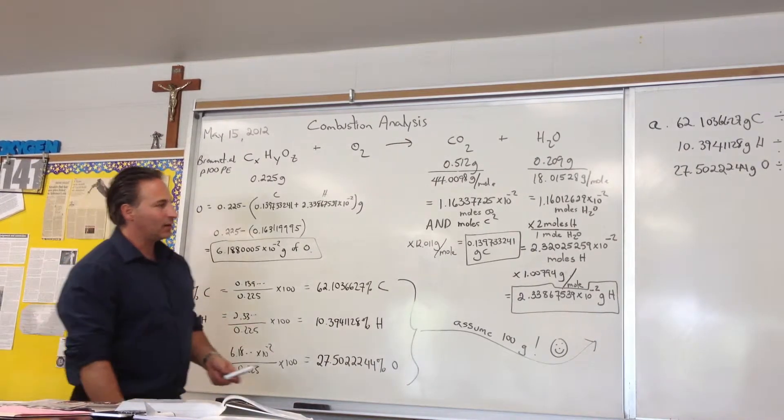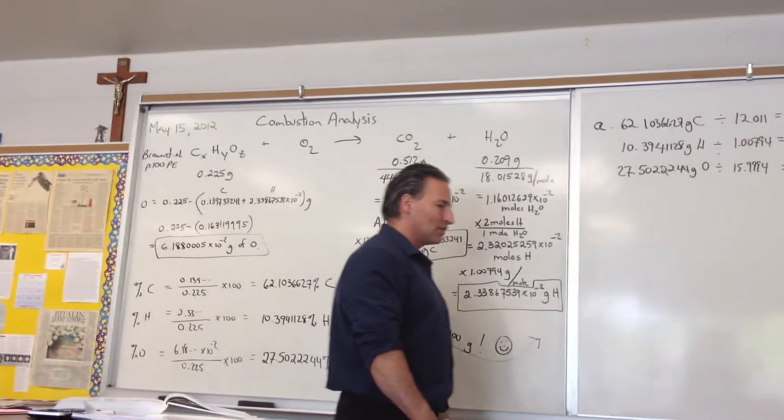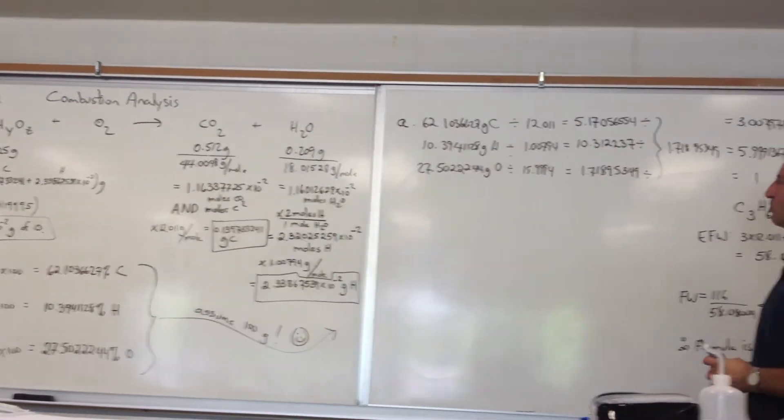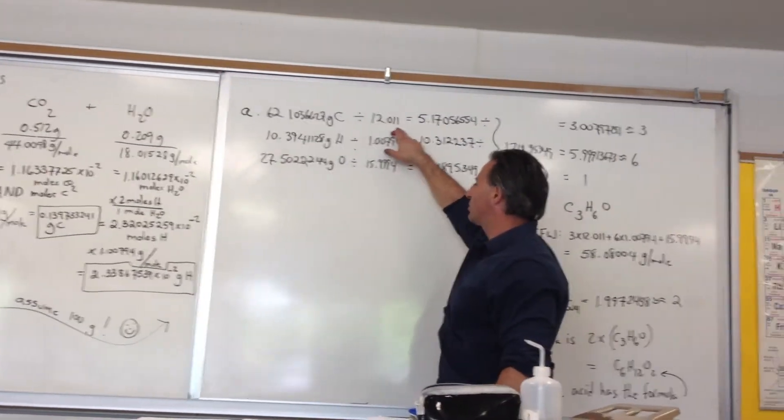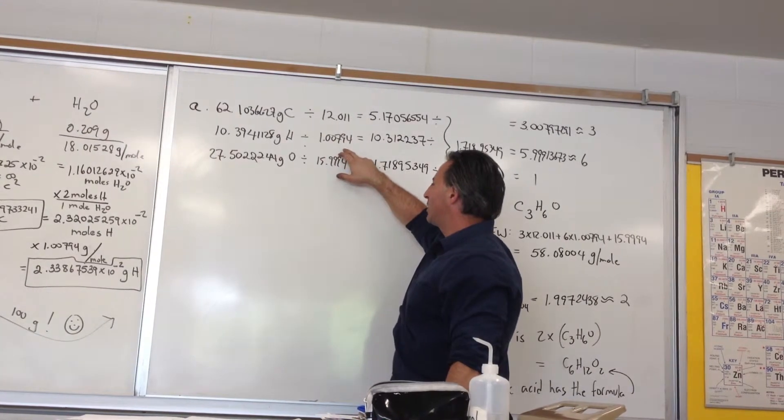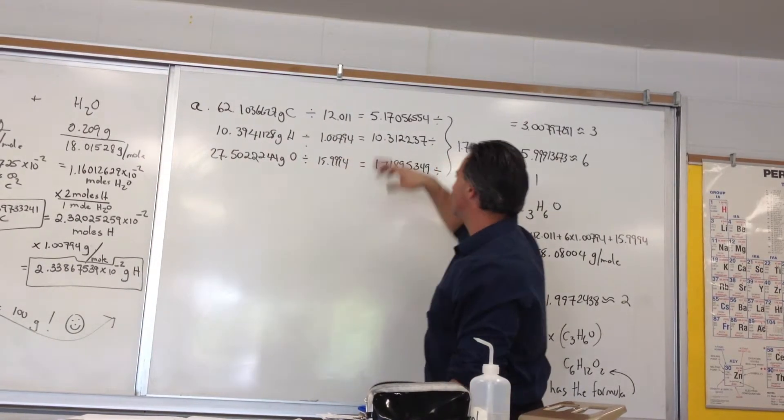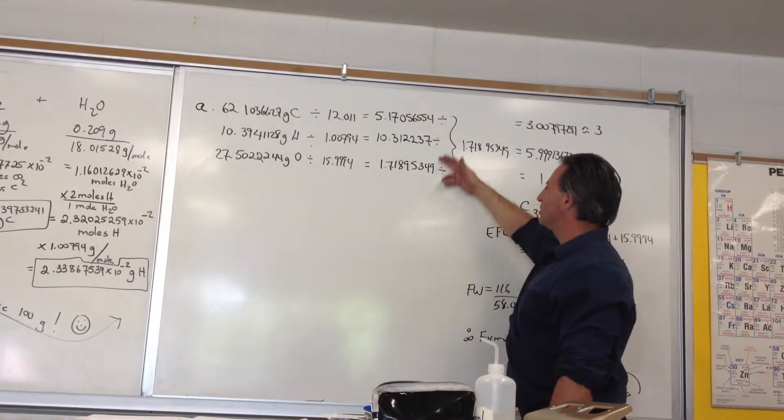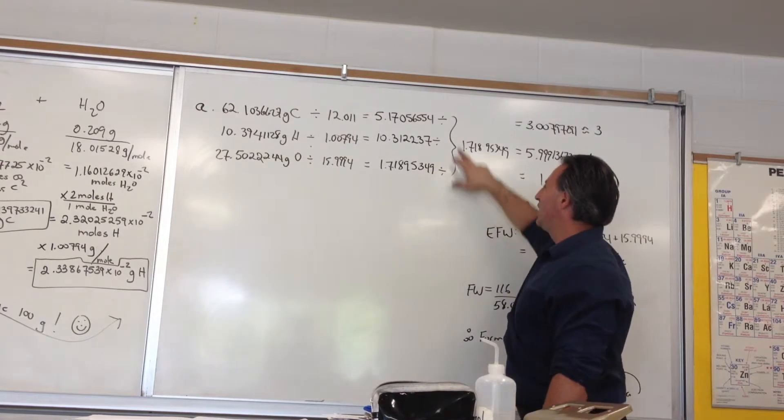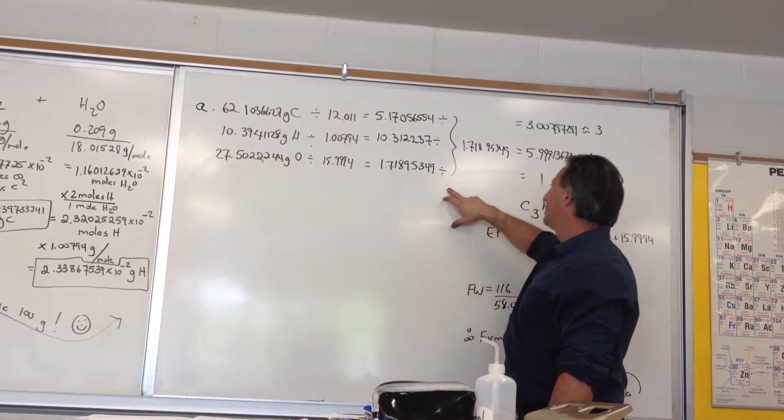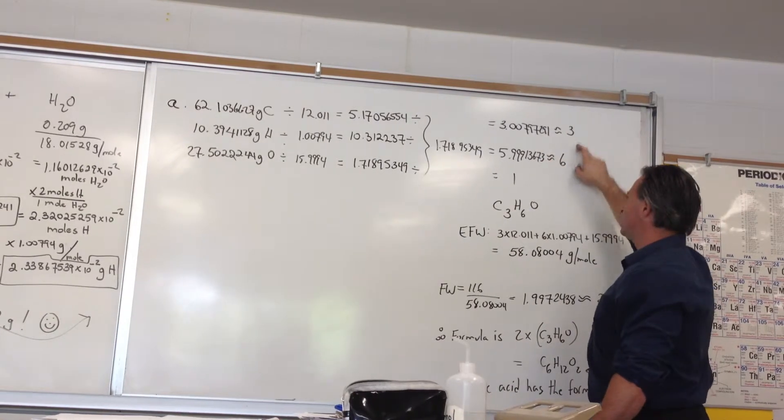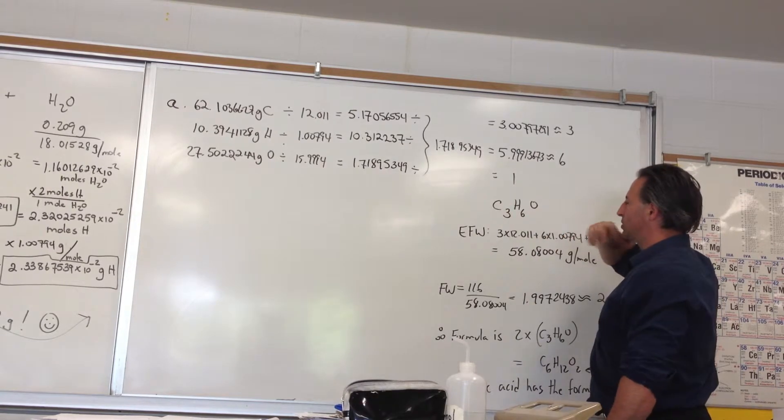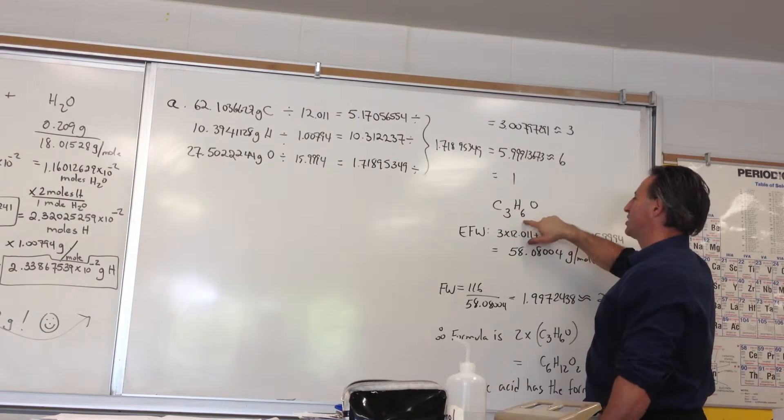To continue, we use the percent composition and divide by the molar mass of each constituent atom: for carbon, 12.011; for hydrogen, 1.00794; for oxygen, 15.9994. This gives us ratios. To get whole numbers, we divide all ratios by the smallest, producing 3, 6, 1. The empirical formula of caproic acid is C3H6O.